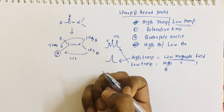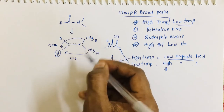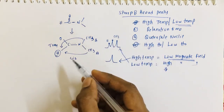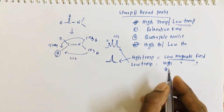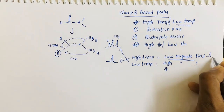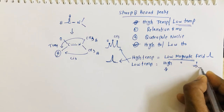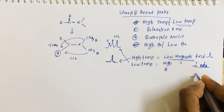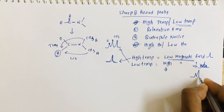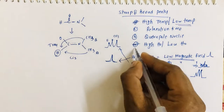At low magnetic field, since the magnet has less power, the methyl groups can easily exchange, so we get a singlet. At high magnetic field we get a two-line signal — one peak for three protons (the methyl groups) and one peak for one proton (the hydrogen).